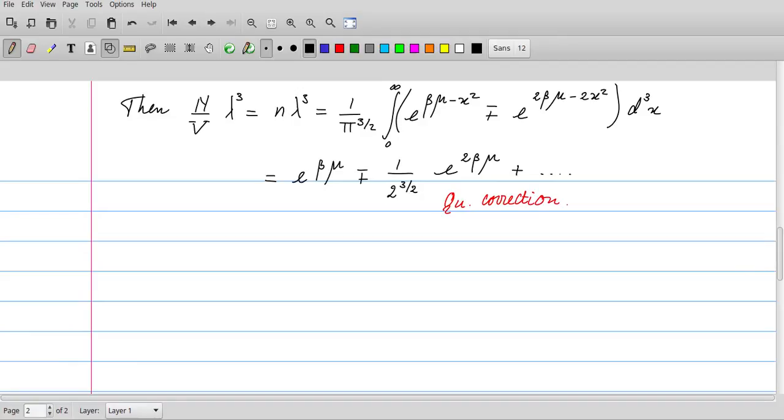Indeed, it's a straightforward exercise to check that n/v times λ³ equals e^(βμ) is just the classical result for the ideal gas in the grand canonical ensemble.